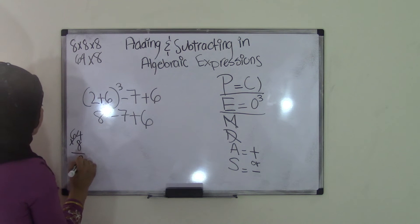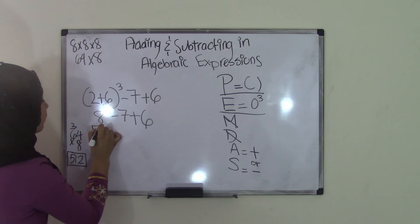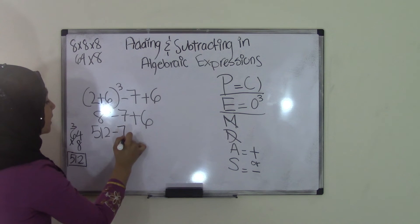8 times 4 is 32, carry the 3. 8 times 6 is 48, plus the 3 equals 51. So we have our product of 512. So we can come over here and write 512, bring down everything else just as it is: 512 minus 7 plus 6.